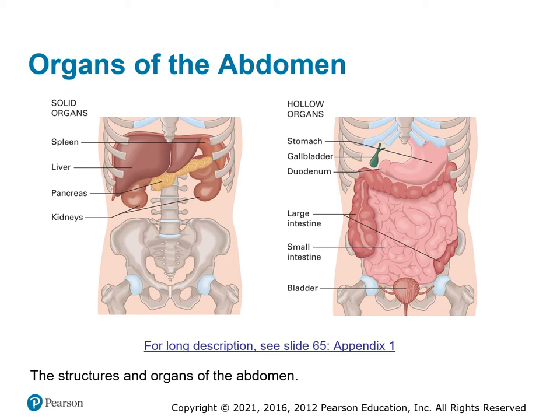The hollow organs include the stomach, the gallbladder, the duodenum, large intestine, the small intestine, and the bladder. You need to remember where each one is, what its function is, and whether it's solid or hollow.